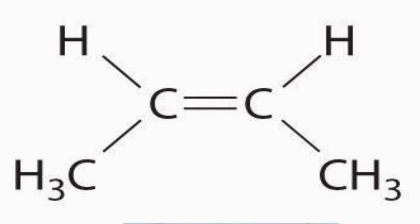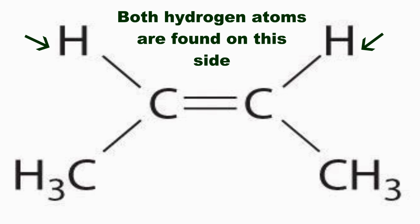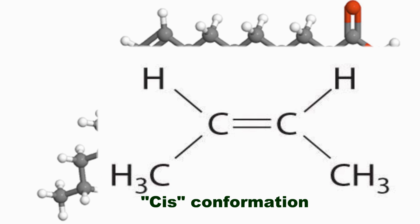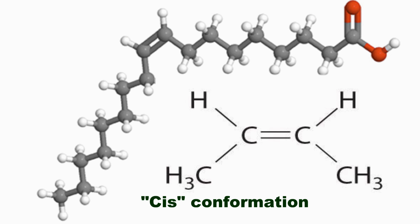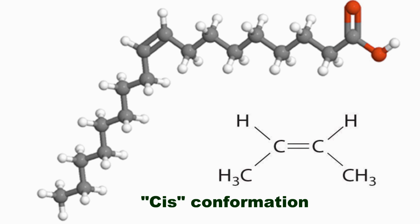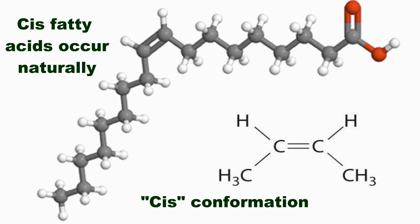Now the placement of hydrogen atoms across a double bond is also important. And the types of unsaturated fats that we've been discussing here are referred to as cis fatty acids, which really means on the same side — the two remaining hydrogens across a double bond are found on the same side of the molecule.